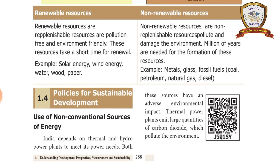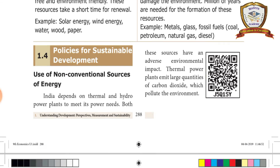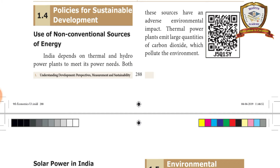Next: renewable resources and non-renewable resources. Renewable resources take a short time for renewal. Non-renewable resources take millions of years to form. Non-renewable resources include metals, glass, fossil fuels — coal, petroleum, natural gas, and diesel. Renewable resources include solar energy, wind energy, water, wood, and paper.